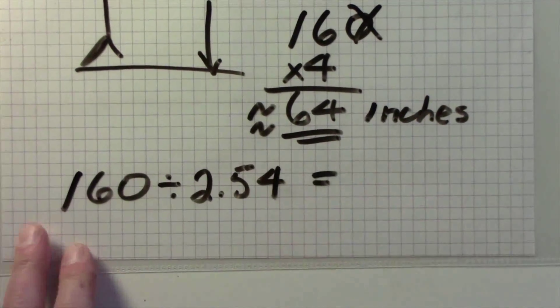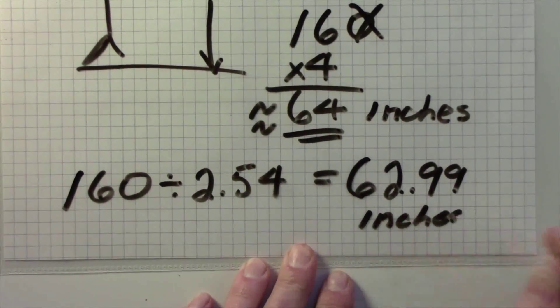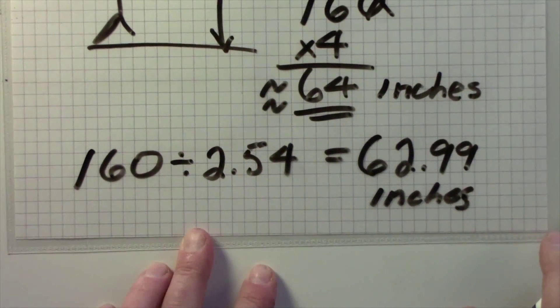Well, if you want to know exactly what it was, you could divide 160 by 2.54, and then you get 62.99 inches. Exactly.